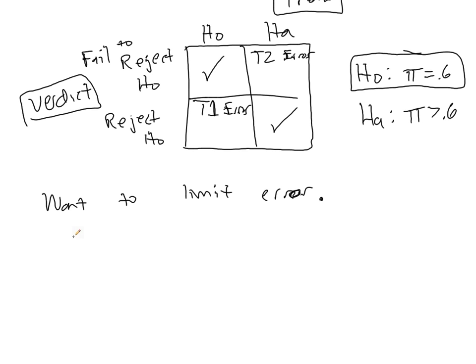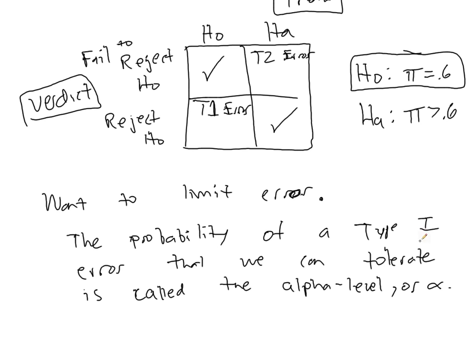The probability of a Type I error that we can tolerate is called the alpha level, or simply the Greek symbol alpha. We get to set this, and the way we get to set it is we make sure that we only reject the null hypothesis under the most stringent circumstances.